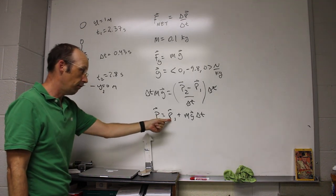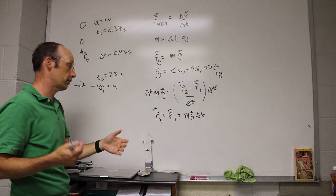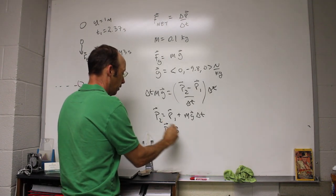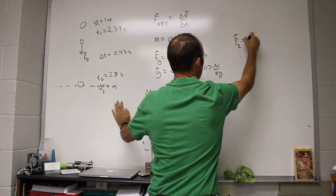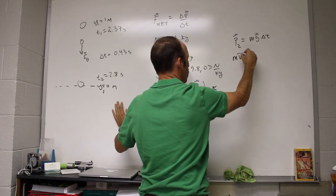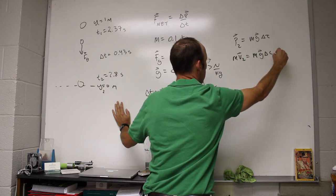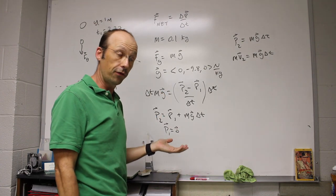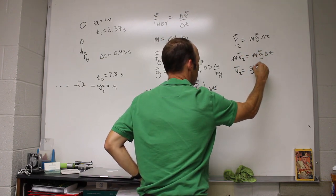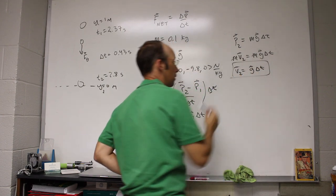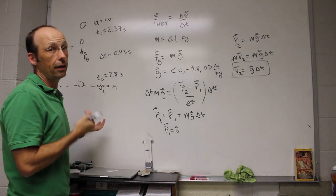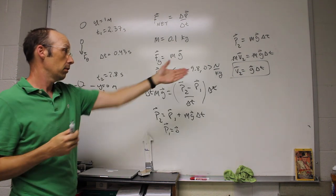And I get p2 equals p1 plus mg delta t. Now, notice vector, vector, vector. You can't add vectors and scalars. So these are all vectors. Now, p1 is zero, the zero vector. So that means p2 is just going to be mg delta t. And this is going to be mv2 equals mg delta t. Since momentum is m times v, for slow moving objects. The mass cancels and I get v2. So if I know g, which I do, and if I know delta t, which I do, I feel pretty comfortable with my delta t. So really, that's why I want to find out how far it went. Then I know the final velocity.